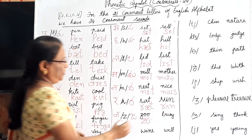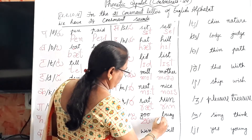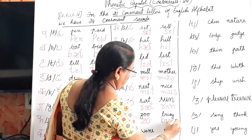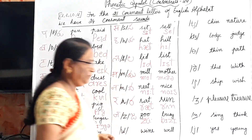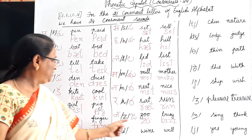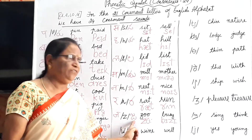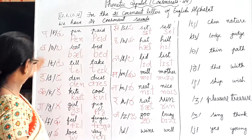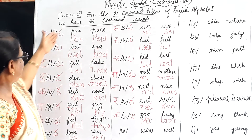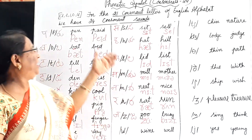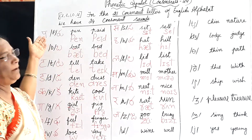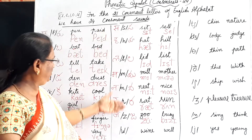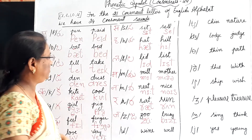Z gives the /z/ sound. Zoo, busy. We are familiar with most of these sounds — papa, baba, maya — most of the consonant sounds we already know.